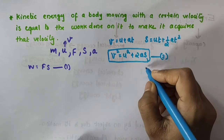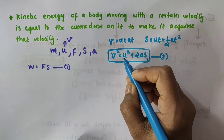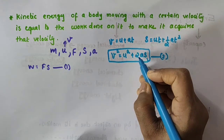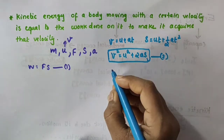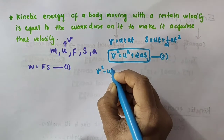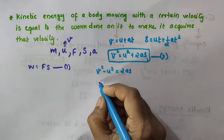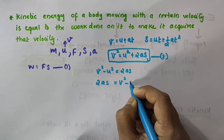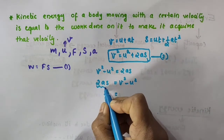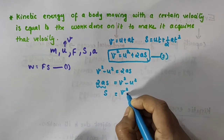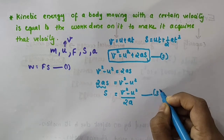Taking equation number 2 as V² = U² + 2AS, this connects initial velocity U, final velocity V, acceleration A, and displacement S. Rearranging, V² − U² = 2AS, so S = (V² − U²) / 2A — taking this as equation number 3.